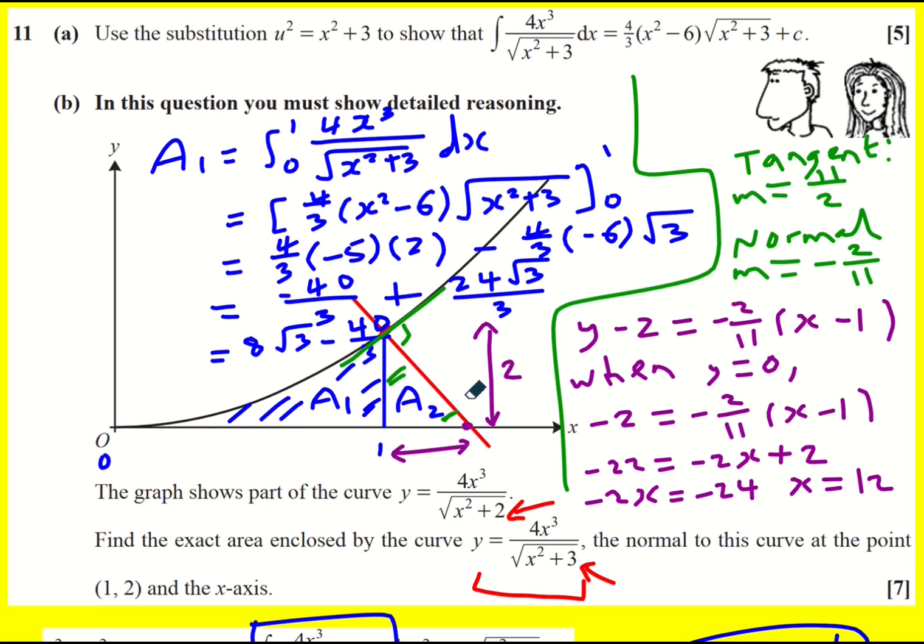All right, that point there is actually at 12, which means the height, sorry, the base is 11. And a2 is going to equal the half times the base, which is 11, times the height, which is 2, which is going to be 11.